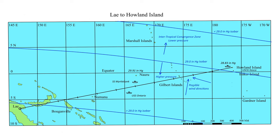There is also a clue in the weather reports — information that has been there all along but appears to have been overlooked. The sea level pressure was slightly lower at Howland, 28.83 inches of mercury, compared with Nauru at 29.91 inches. In a southern hemisphere high pressure system, with your back to the wind, the high pressure is on the left — according to Buys Ballot's law, useful knowledge for the captain of a sailing ship.